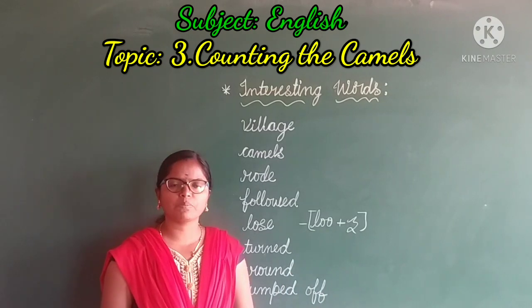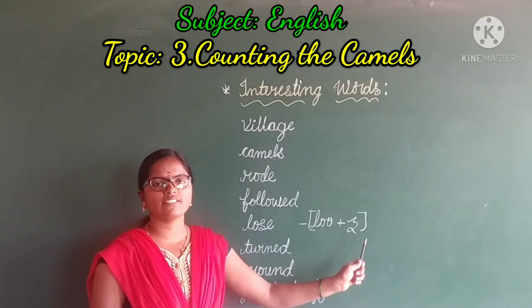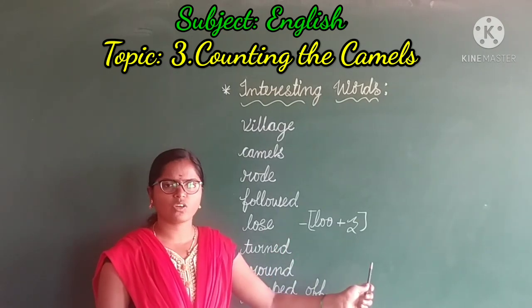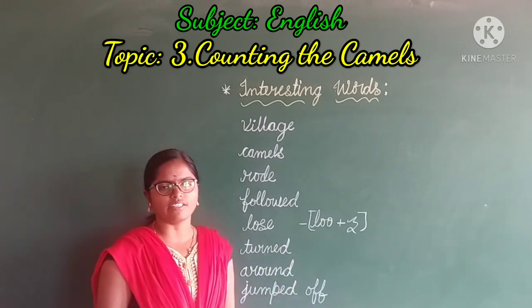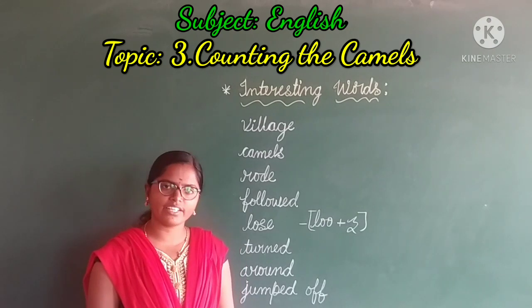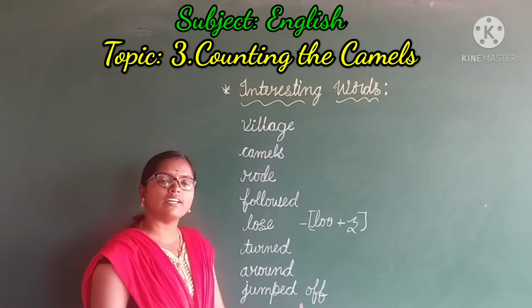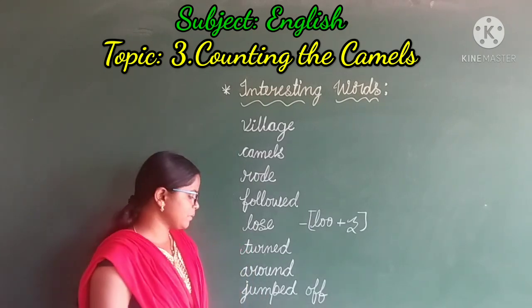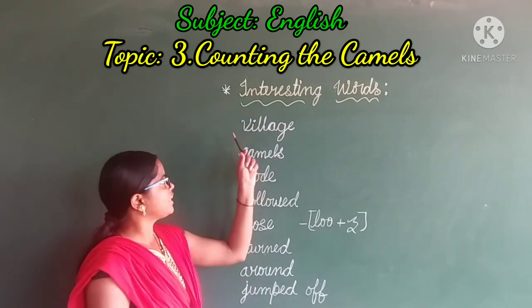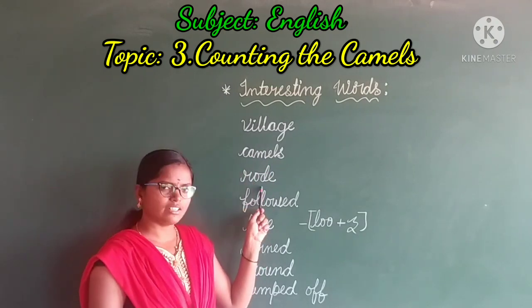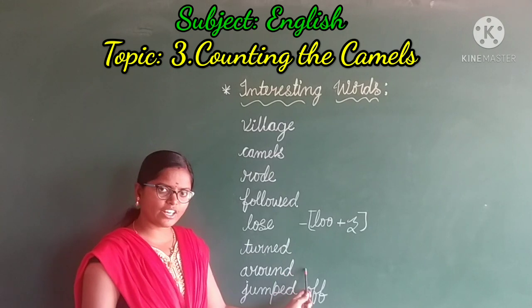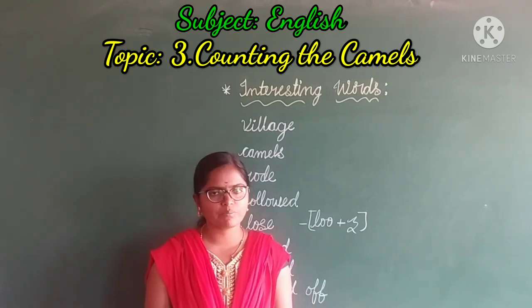Next: L-O-S-E — Loose. See how to pronounce this word: Loose. Not 'loose' — it is 'lose'. Next: T-U-R-N-E-D — Turned. Next: A-R-O-U-N-D — Around. Next: J-U-M-P-E-D O-F-F — Jumped off. Now I am going to read all these once again — listen well. Interesting words: Village, Camels, Rode, Followed, Loose, Tall, Around, Jumped off. These are the interesting words from the third lesson.